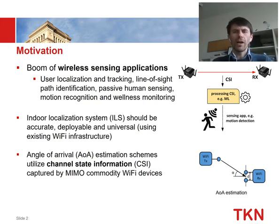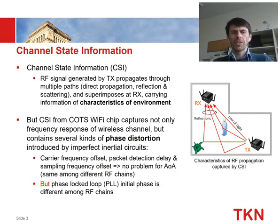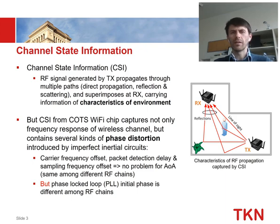For angle-of-arrival estimation you need MIMO systems — multi-antenna systems. Channel state information is obtained when the transmitter sends a radio signal that propagates through multiple paths, which could be a direct path, reflection, or scattering, and then superimposes on the receiver side. This CSI contains all the characteristics of the environment.